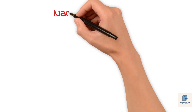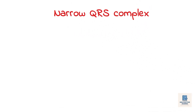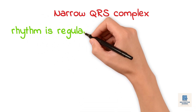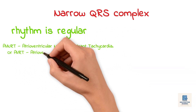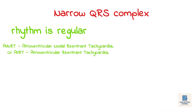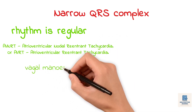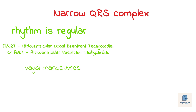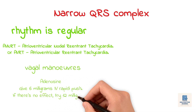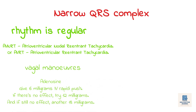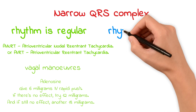If it's a narrow QRS complex, that usually means the origin is above the ventricles, so it's a supraventricular tachycardia, or SVT. If the rhythm is regular, it's most likely AVNRT — atrioventricular nodal reentrant tachycardia — or AVRT, atrioventricular reentrant tachycardia. In either case, your first step is to try vagal maneuvers like a Valsalva. If that doesn't work, move on to adenosine: give 6 mg IV rapid push. If there's no effect, try 12 mg, and if still no effect, another 18 mg. Adenosine briefly blocks the AV node, which can interrupt the circuit and restore normal rhythm. If it doesn't work, get senior input and consider alternative causes.